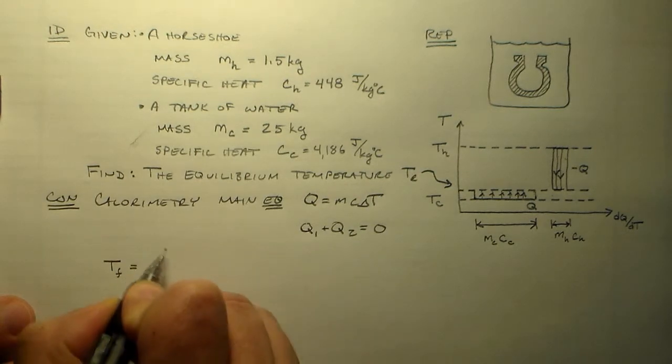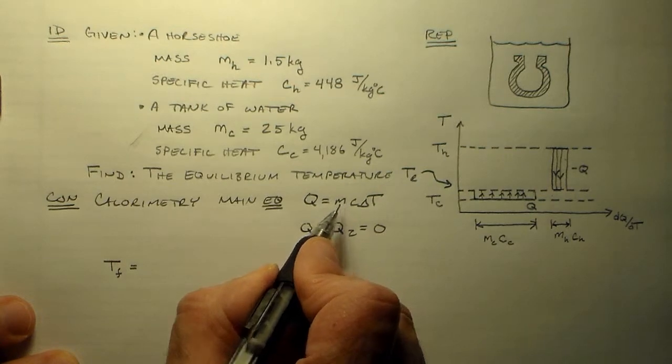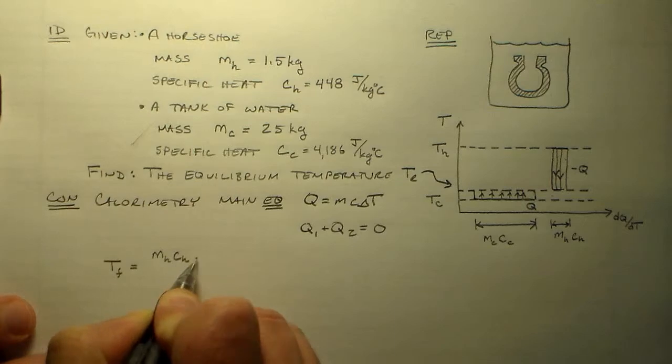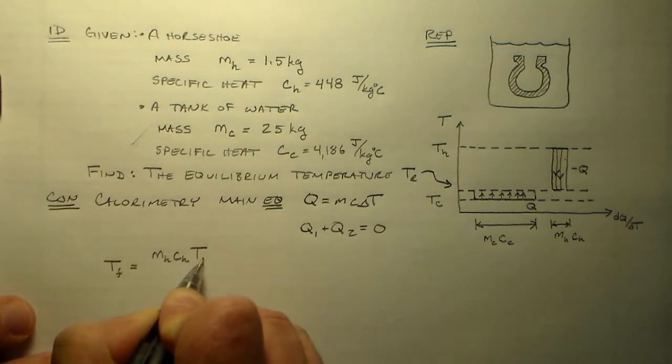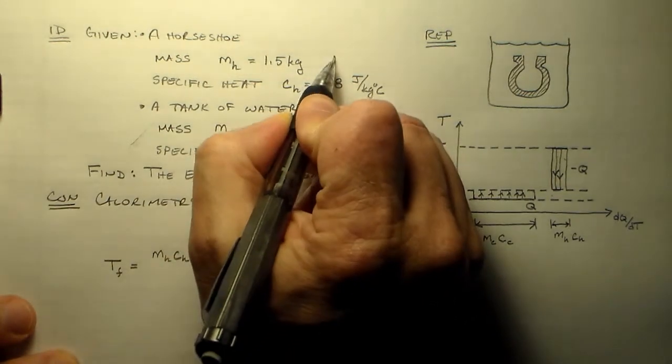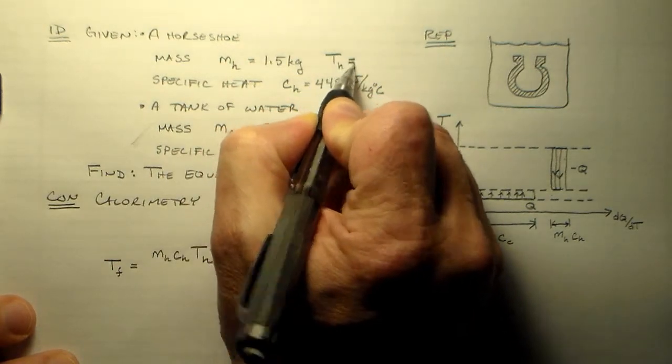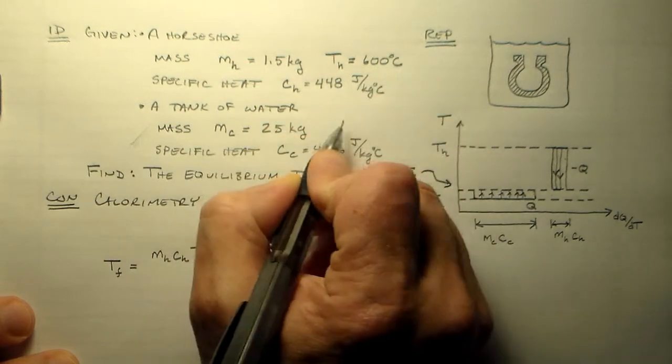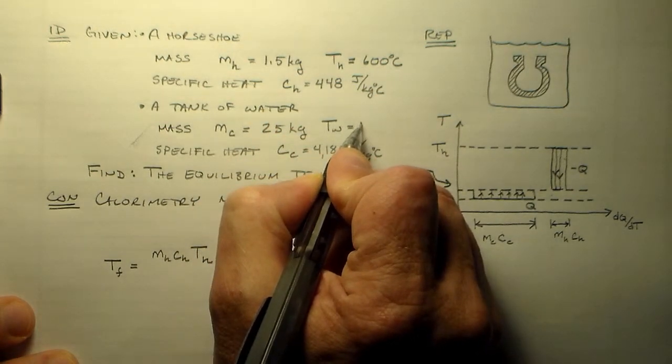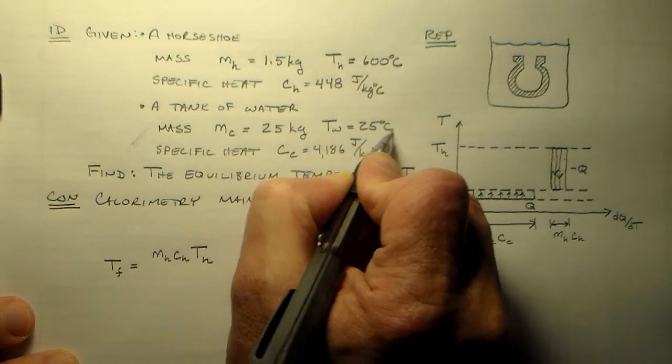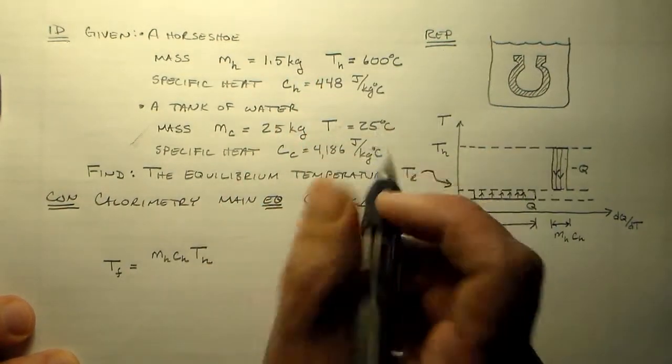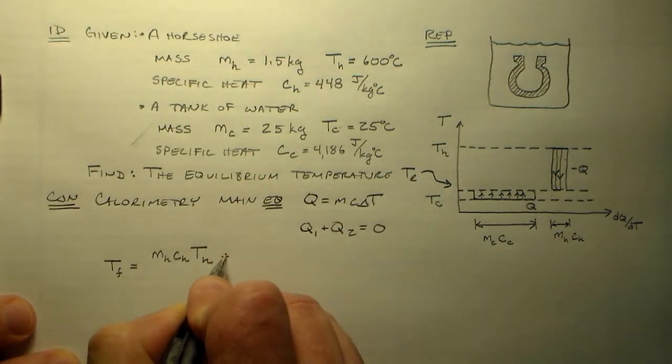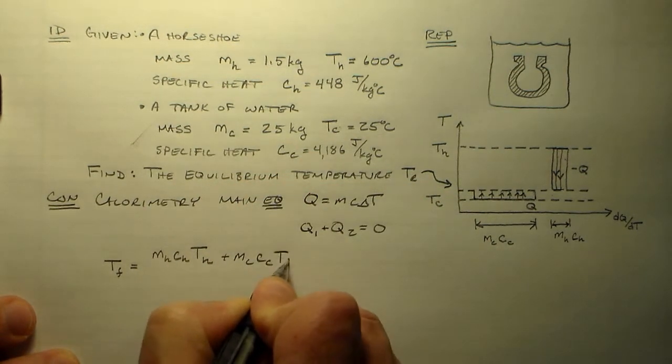It will actually give us the equation the final temperature is going to be equal to m hot, c hot, t hot, the initial temperature of the water. I forgot to put that in there, up here. So th is originally 600 degrees C, and the water is originally 25 degrees C. If we're calling it water, we're calling it cool water. Plus mc cc tc.